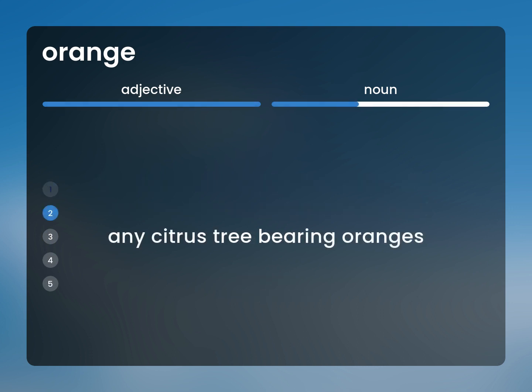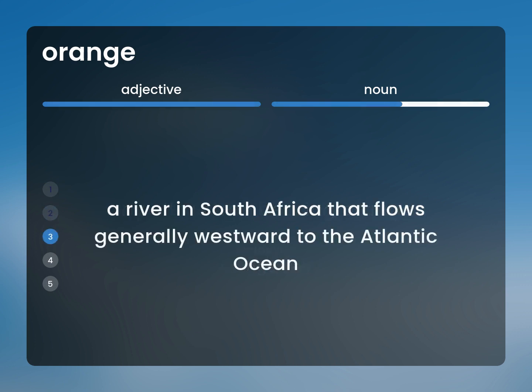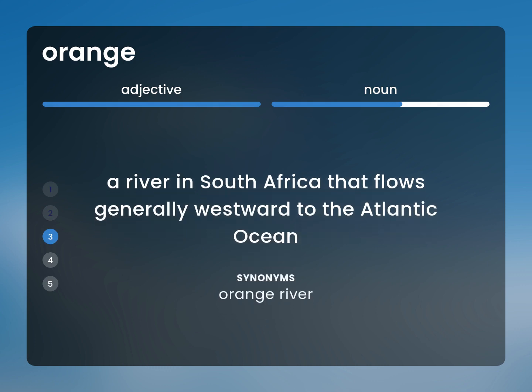Any citrus tree bearing oranges. Orange tree. A river in South Africa that flows generally westward to the Atlantic Ocean. Orange river.